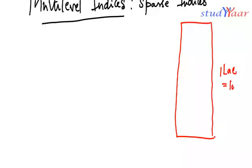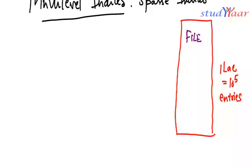So let's see how they work. Let's suppose I have a file which has 1 lakh entries, that is 10 raise to power 5 entries I have in my file.